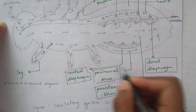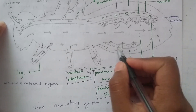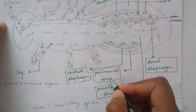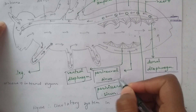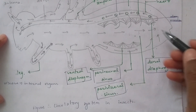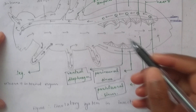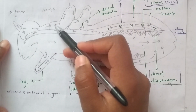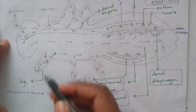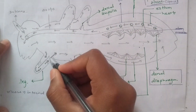The perineural sinus is where the nervous system is present, located on the ventral surface. This region includes the dorsal diaphragm and the ventral diaphragm. Blood flows to the wings, ovaries, antennae, and legs.